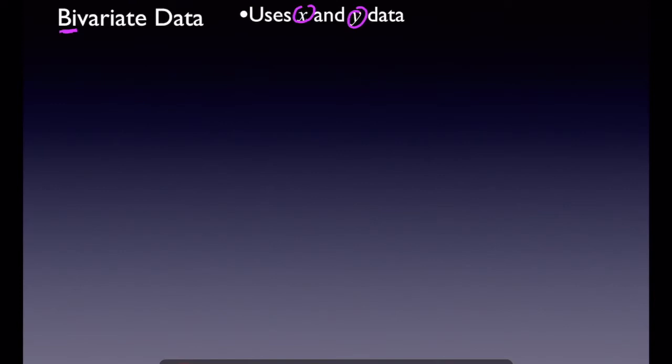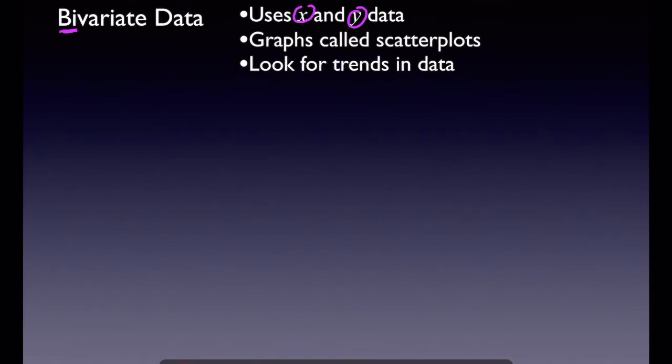So we had two numerical variables, and when we plotted those graphs we called them scatter plots, and we would look for trends in the data. A common word we were using was positive trends or negative trends. We didn't use SOCS — so if you'll notice in Chapter 12 we weren't talking about shape, outlier (well, we actually did talk about outliers), but no center and spread kind of data. We're looking at trends, like these are positively related and it's strong, or negatively related and moderate.